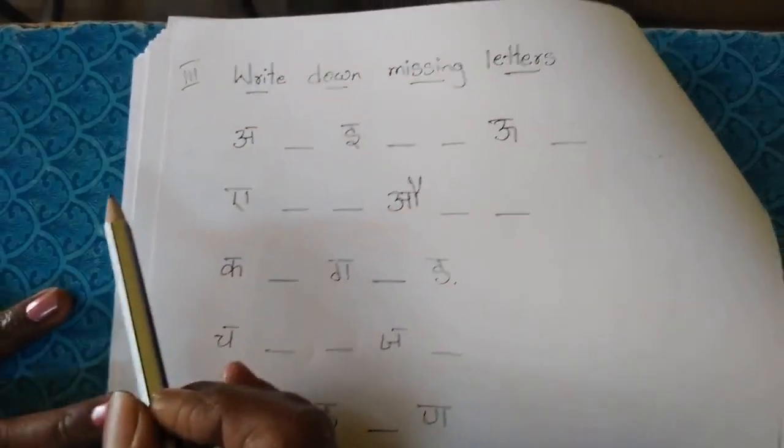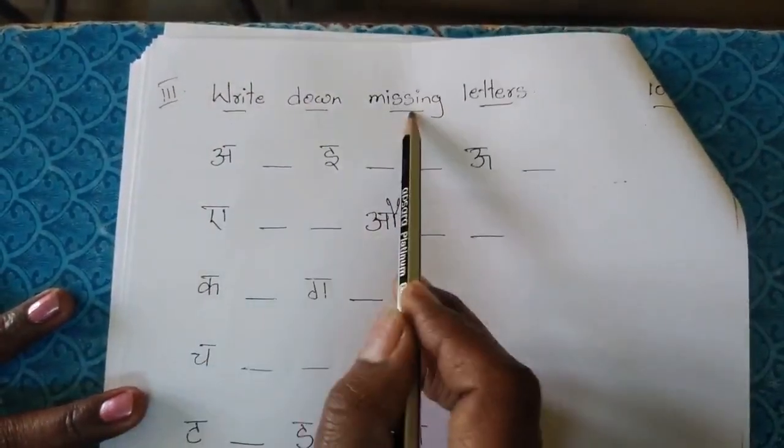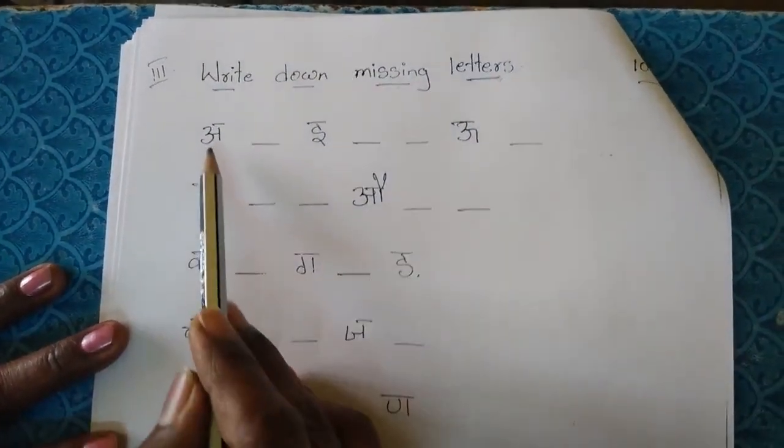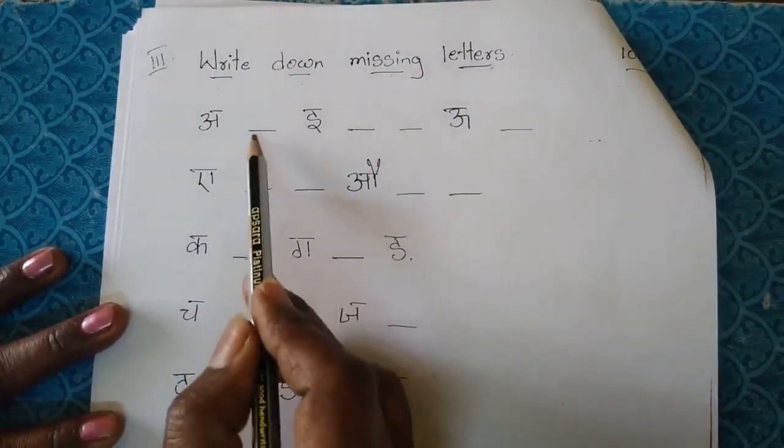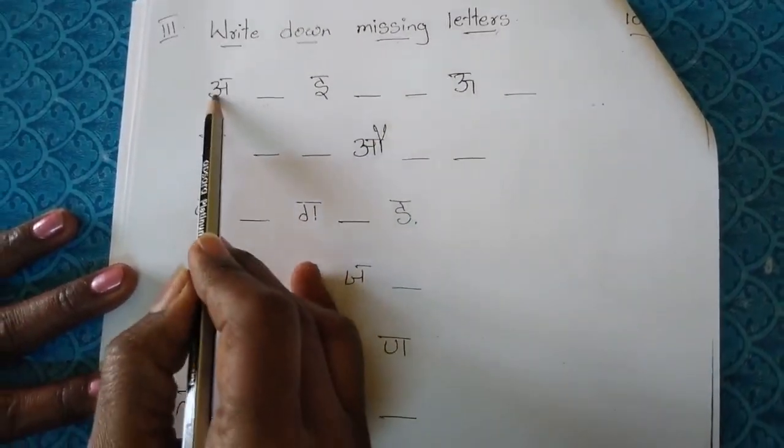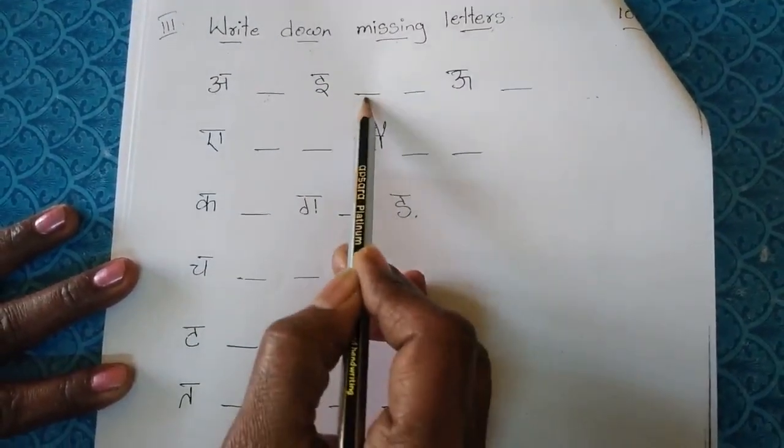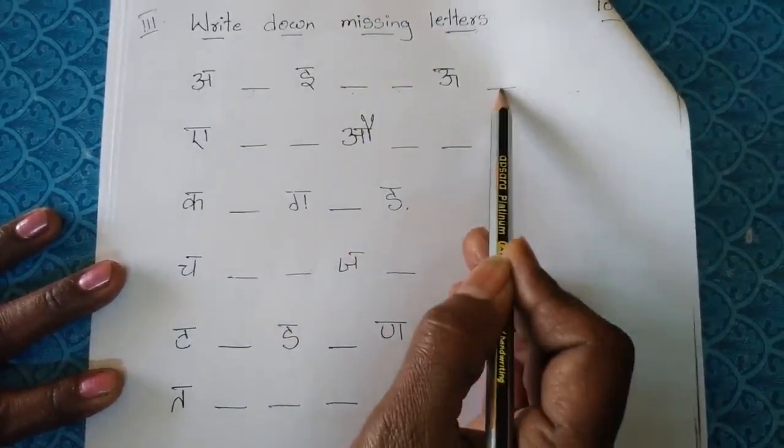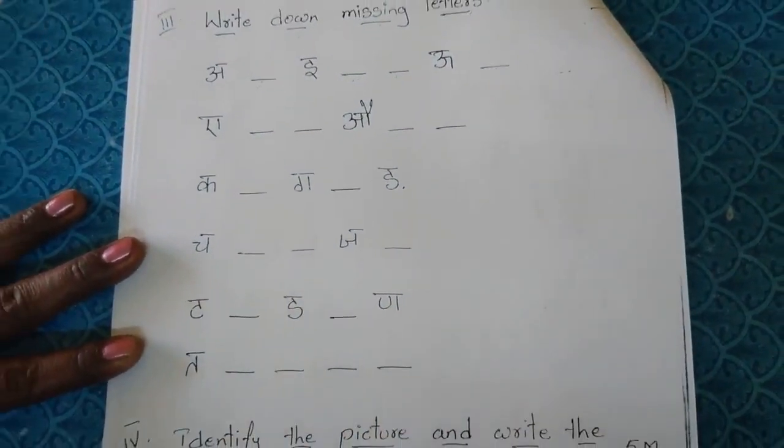Now next one is, third bit is write down missing letters. Missing letters. I will give you some letters and some blanks. They have to fill these blanks. Like that they have to complete this bit.